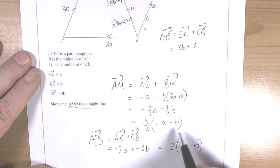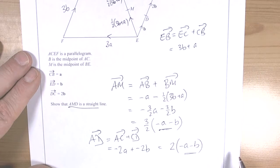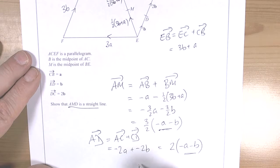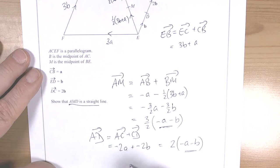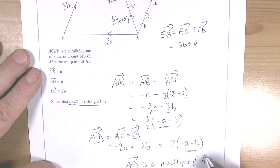Okay, so what we can see straight away then is that vector and that vector are the same. So we can conclude that AD is a multiple of AM, therefore is parallel.